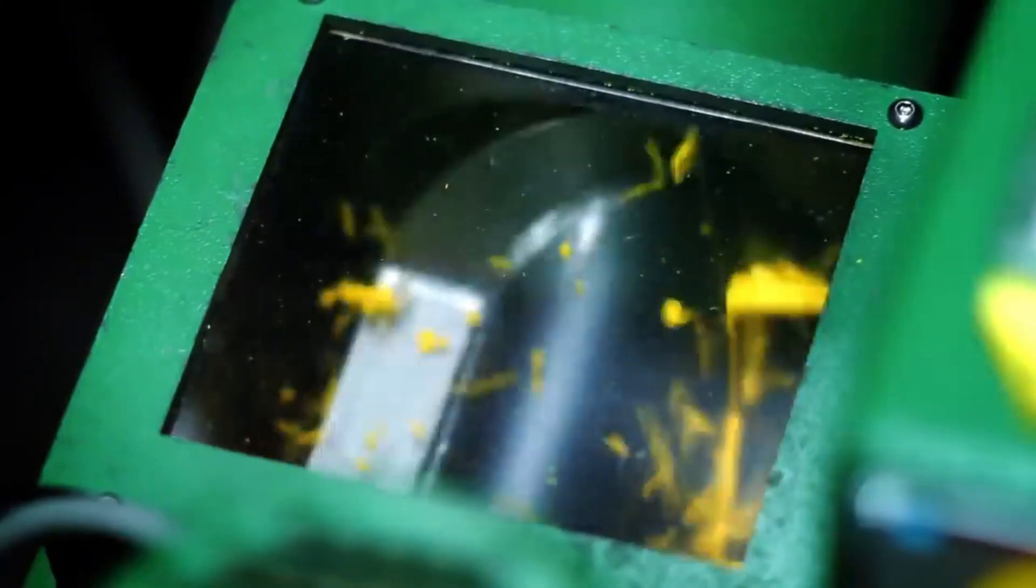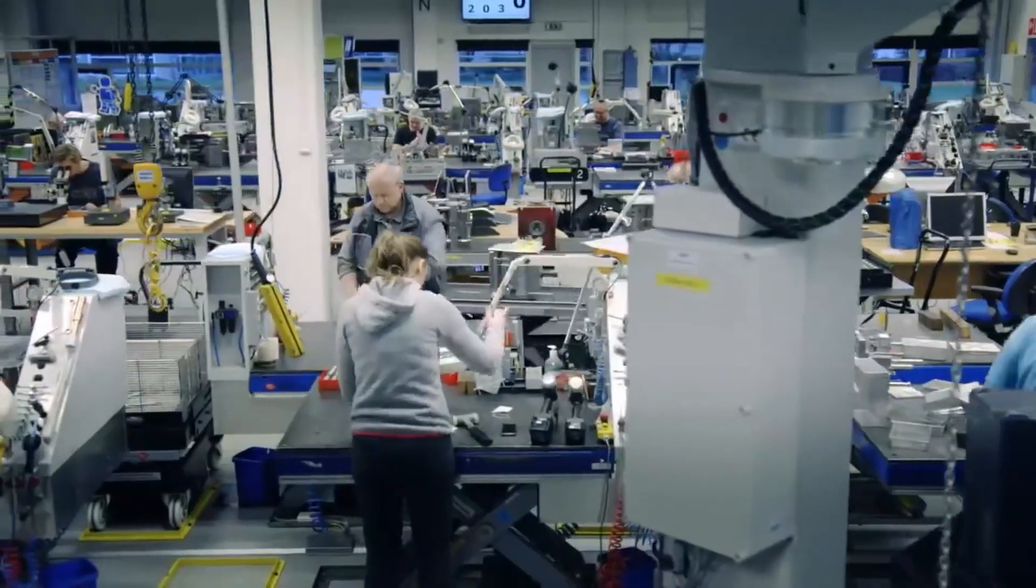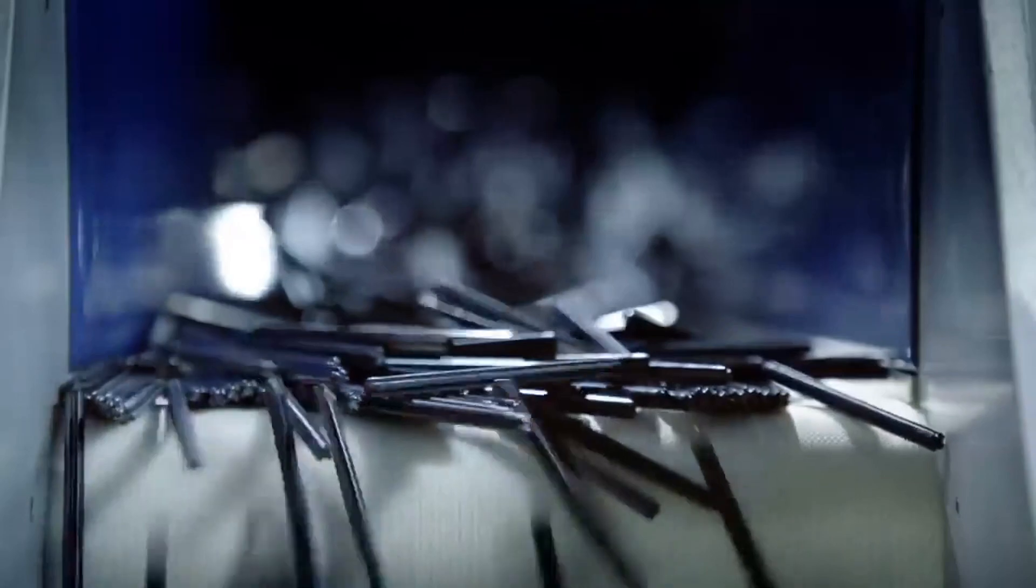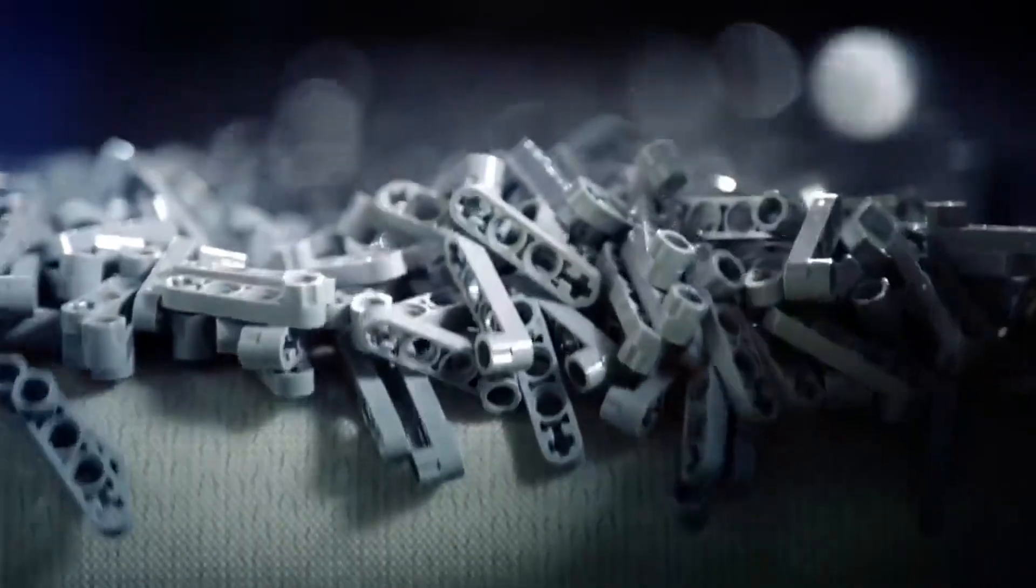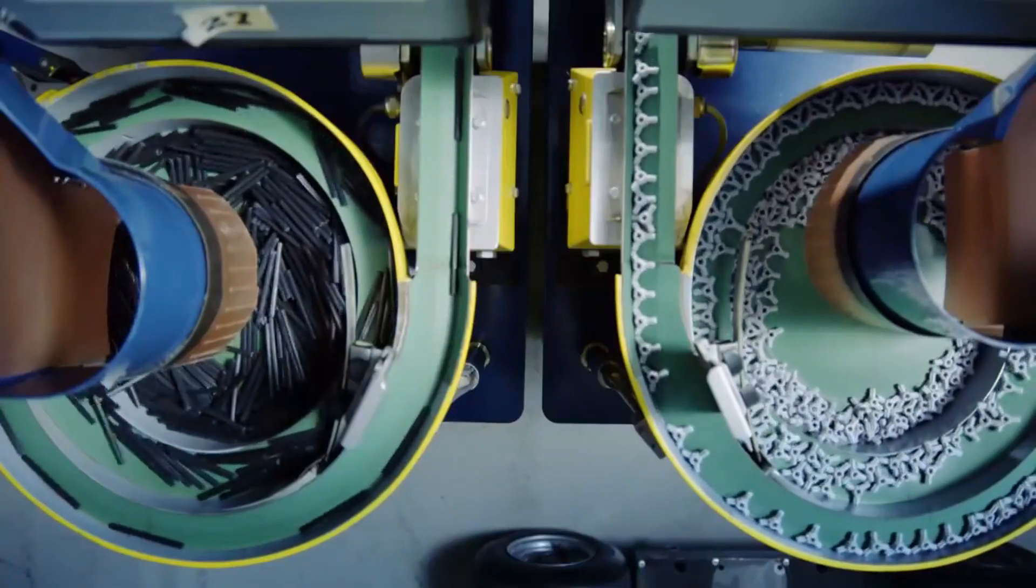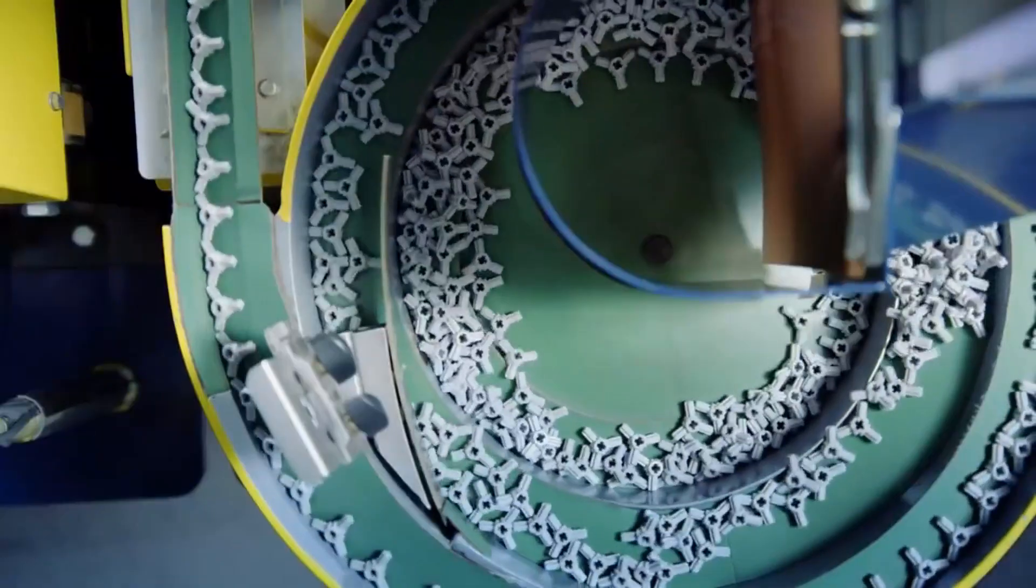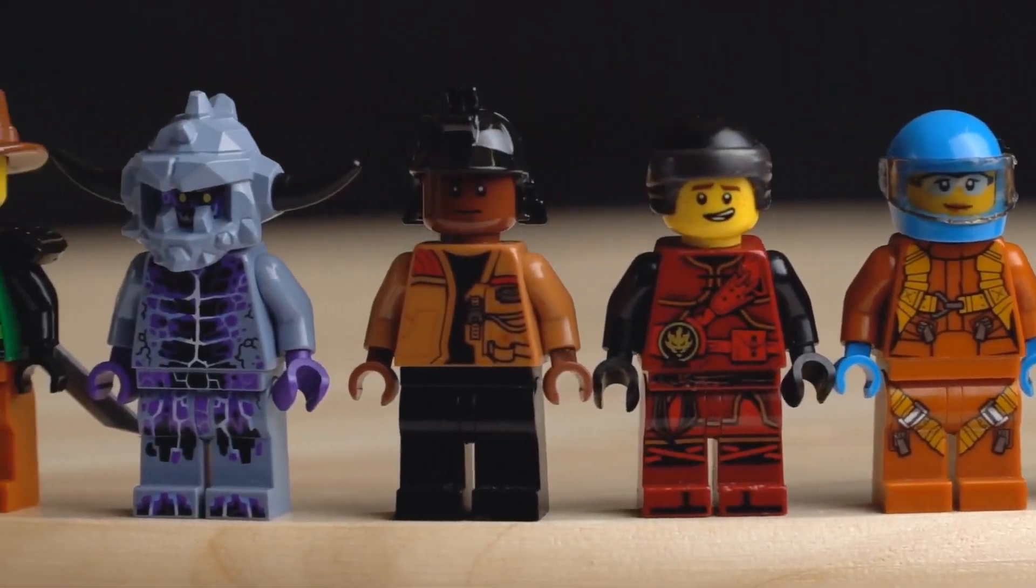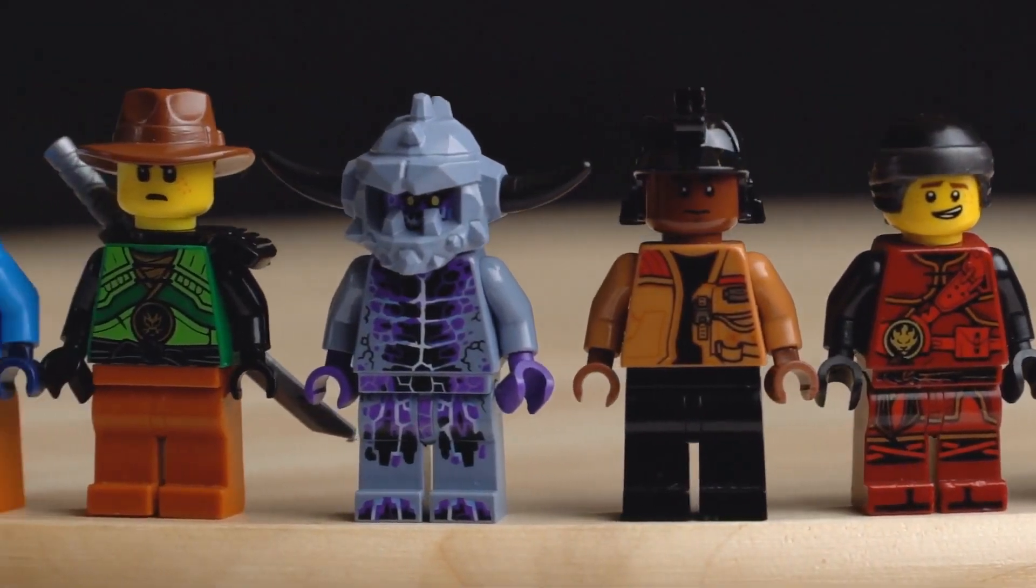The molten plastic is injected into the molds at high pressure, ensuring that every brick is formed accurately. The molds are cooled rapidly to solidify the plastic, and the newly formed bricks are ejected from the molds. This injection molding process is crucial for maintaining the uniformity and quality of Lego bricks. Each brick must meet exacting standards to ensure they interlock with other bricks seamlessly.